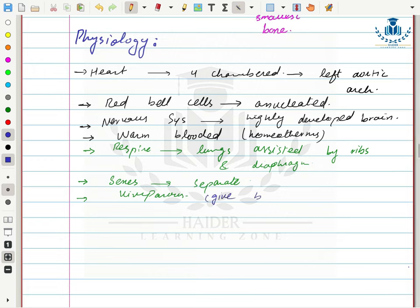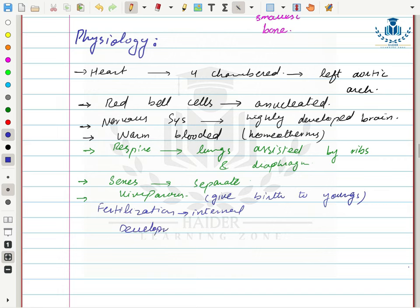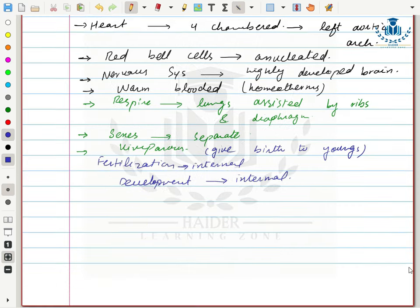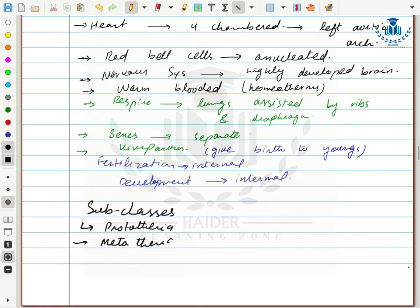Their sexes are separate and they are mostly viviparous — females give birth to young ones. Fertilization is internal and development of the embryo is mostly internal in the mother's body, though some development occurs after birth, as in the case of kangaroos. Class Mammalia is further divided into three subclasses: Prototheria, Metatheria, and Eutheria.